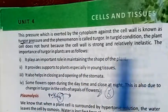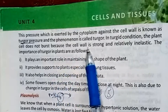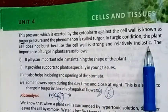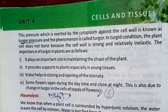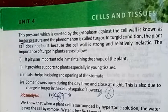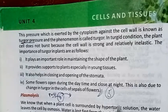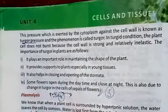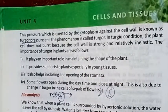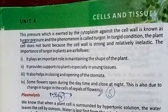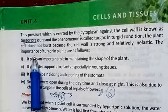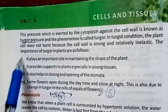In turgid condition, the plant cell does not burst because the cell wall is strong and relatively inelastic. The cell wall is strong with flexibility, which prevents the cell from bursting.